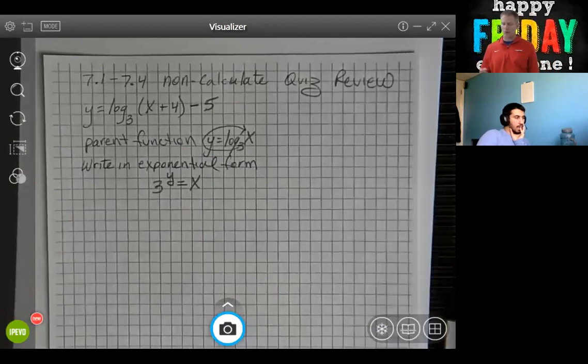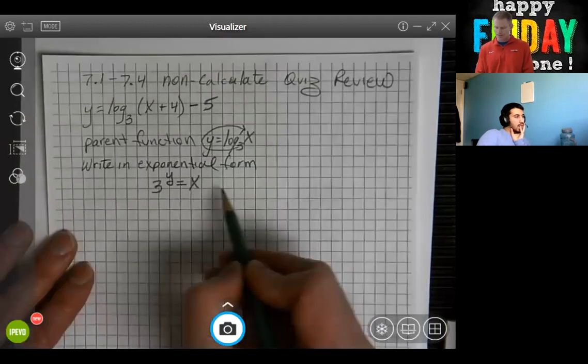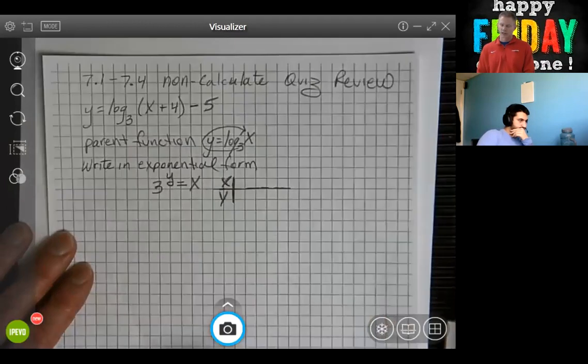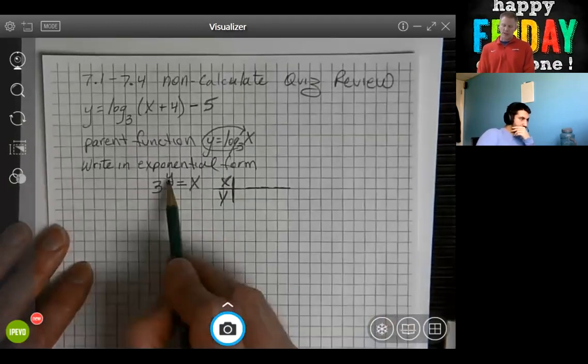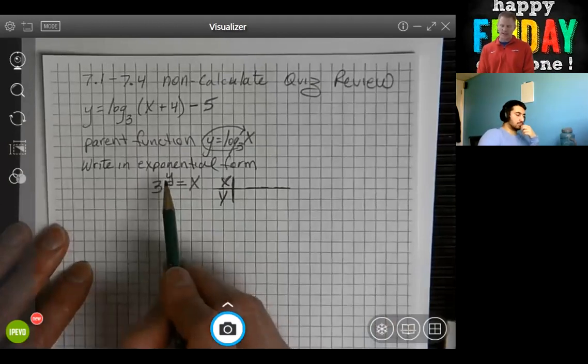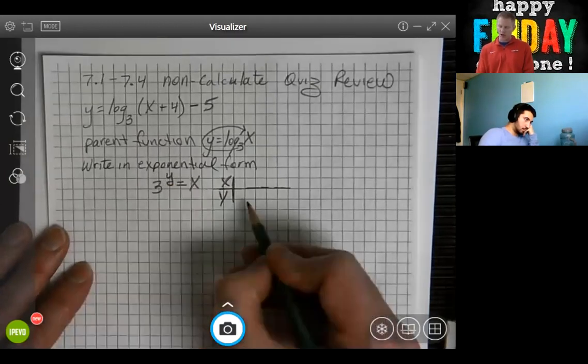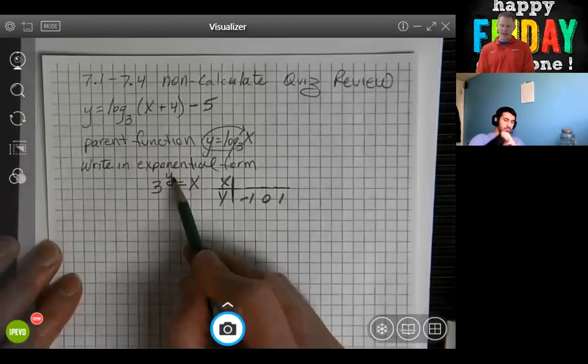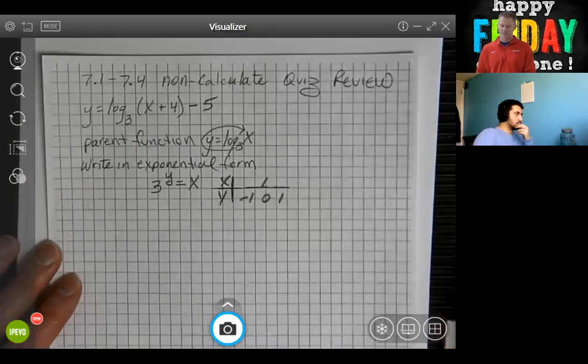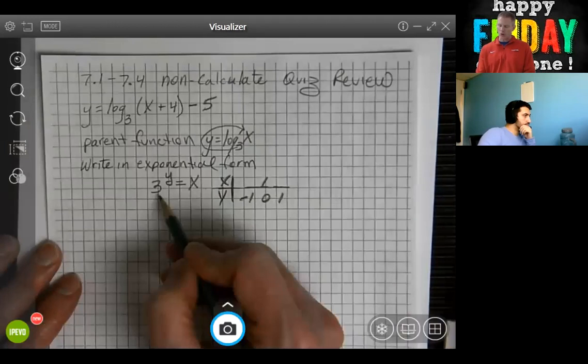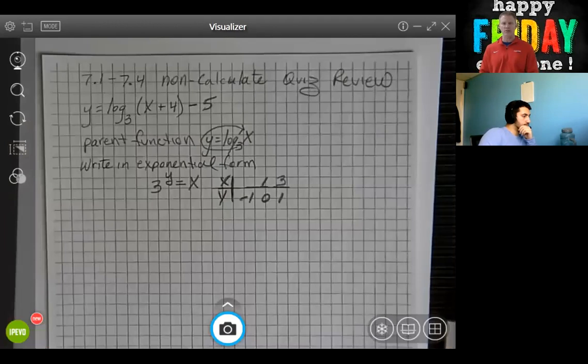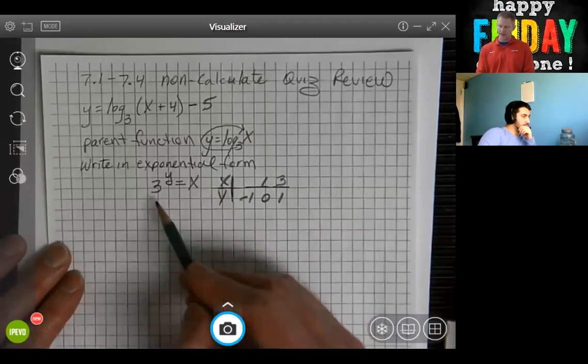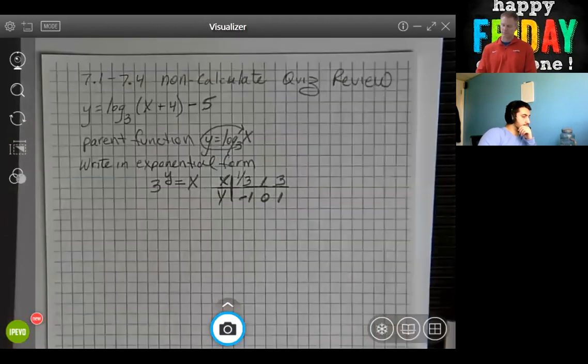That helps us develop what the graph is going to be for the parent function. We have our x value and our y value. When we're working with the exponential, notice the exponent is a y. That is what we're going to plug our numbers into so we can calculate the x. We're going to put our negative 1, our 0, and the 1 in for the y value. When we do 0 of any base, you always get the number 1. When you do 1 for any base, you always get the b value. And when you use negative 1, you always get the reciprocal of the base. In this case, 1 over 3.